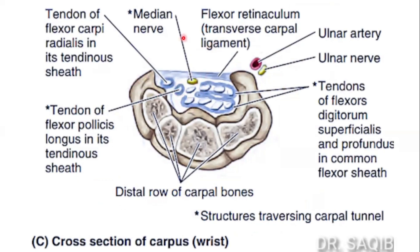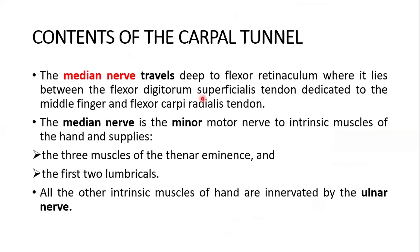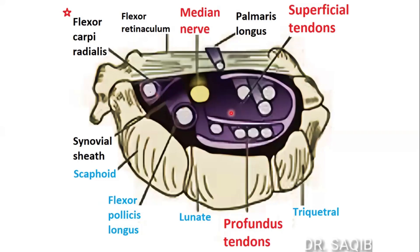These structures are present in the carpal tunnel. The median nerve travels deep to the flexor retinaculum, where it lies between the flexor digitorum superficialis tendon dedicated to the middle finger and the flexor carpi radialis tendon. The median nerve is present between these two structures.